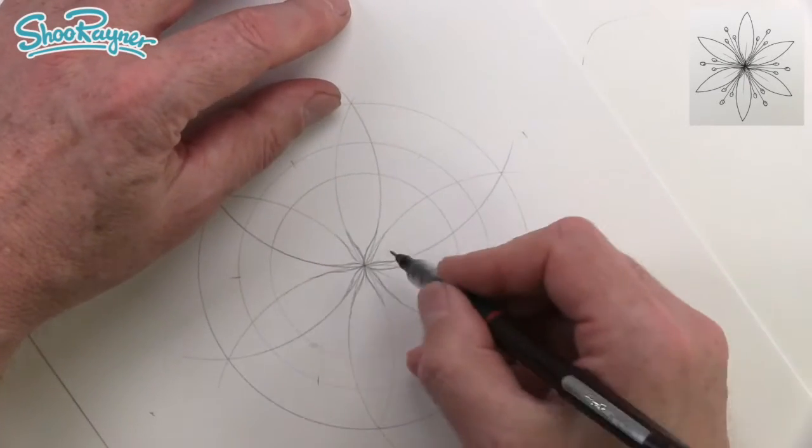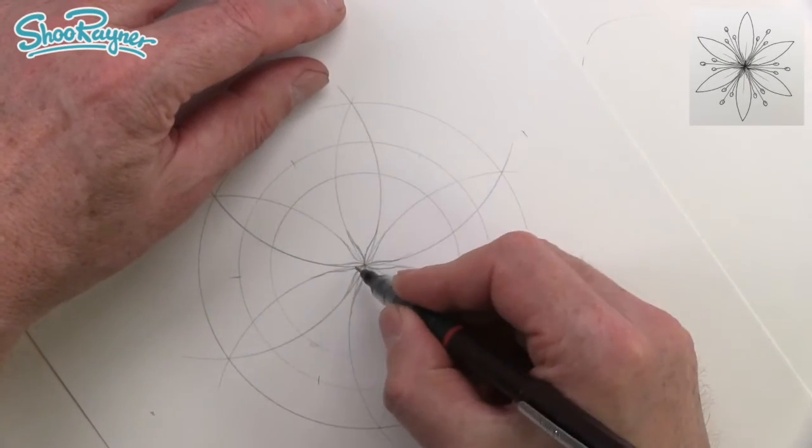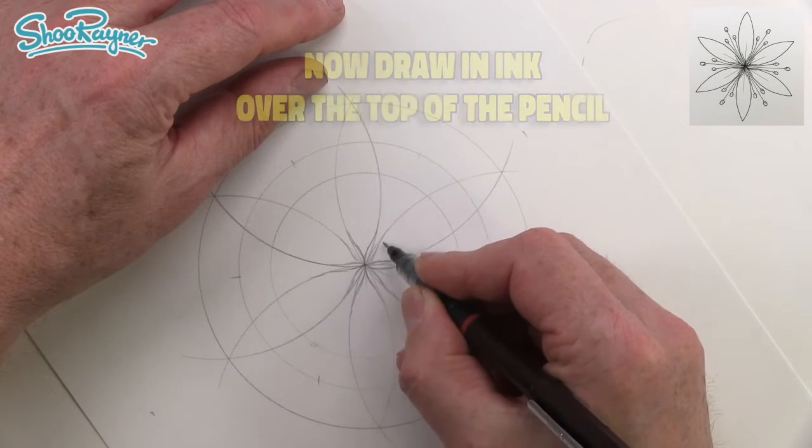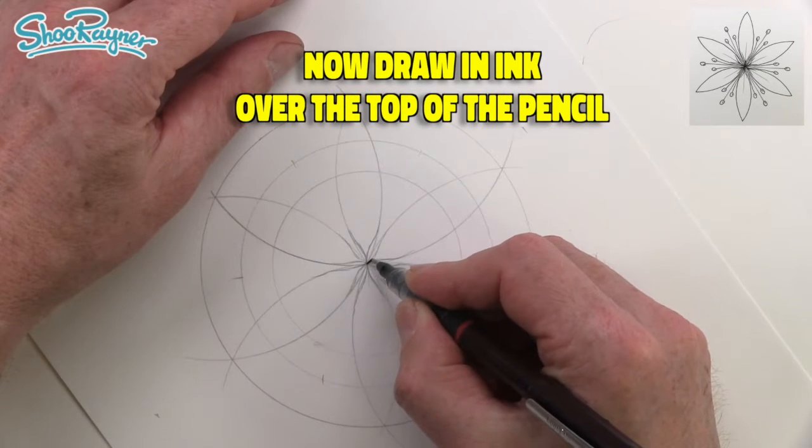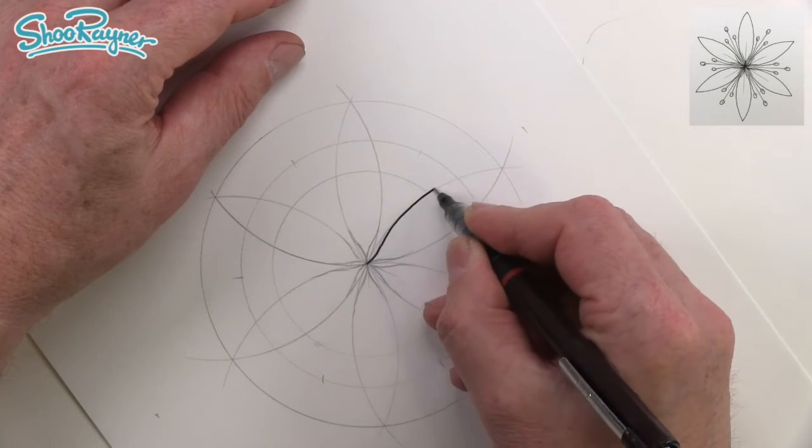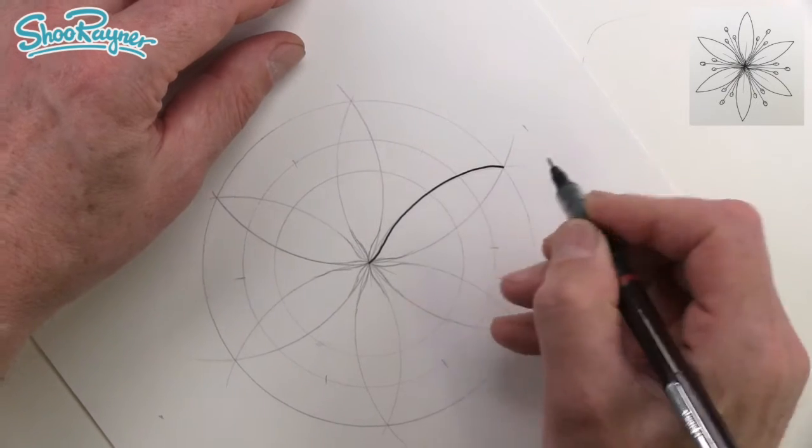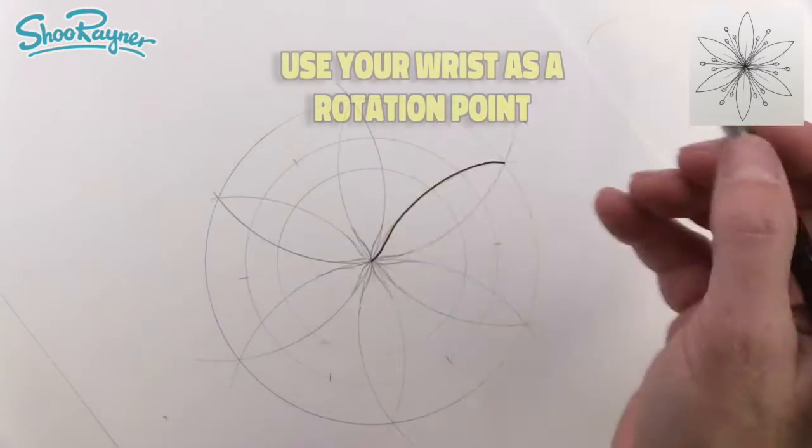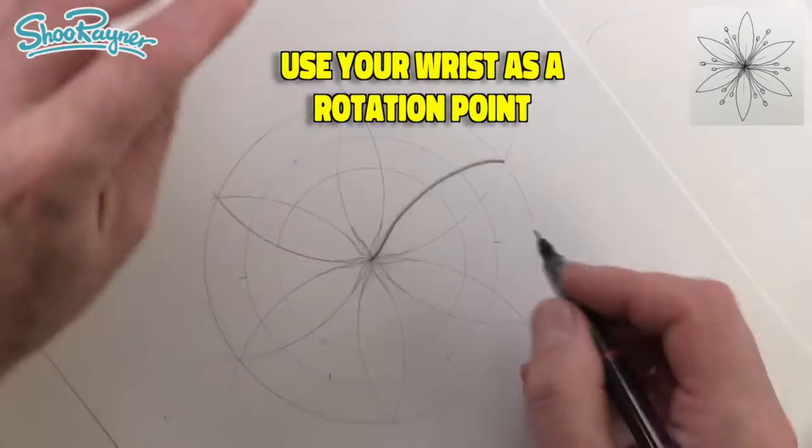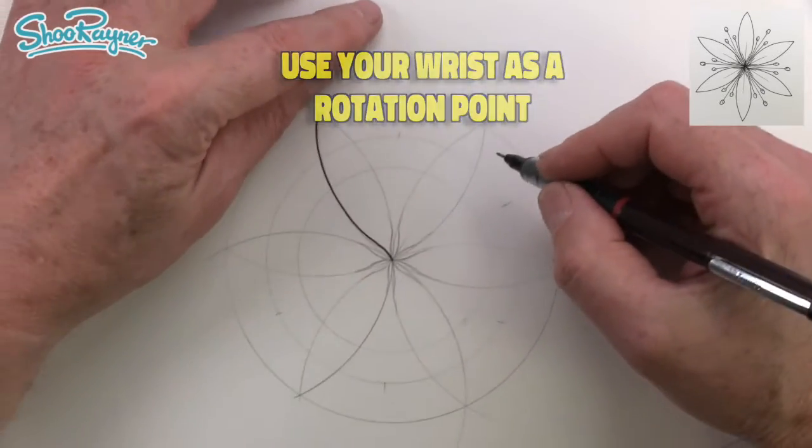And now we're going to draw in ink. So we're going to follow that new curve line that we did from the very centre, all the way out and down like that. Use your wrist as like the centre point of the compass and that will help you get a smoother curve.